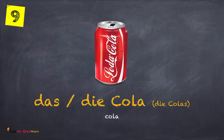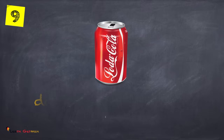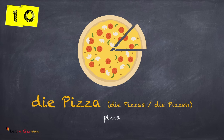das or die Cola, die Colas — once again, die Cola, die Colas. And some words have two plural forms, like this one here: die Pizza, die Pizzas or die Pizzen — once again, die Pizza, die Pizzas or die Pizzen.